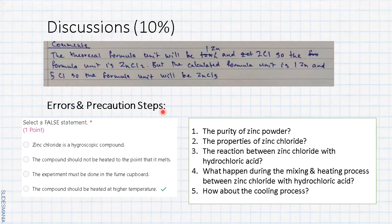Next is errors and precaution steps. You have to identify two things: for the whole process, why is there error? There's one question during pre-lab asking about select a false statement. The answer is D: the compound should be heated at higher temperature. No. While for the heating process we have to heat it slowly. Zinc chloride is a hygroscopic compound, yes. We cannot heat to the point that it melts, yes. The experiment must be done in the fume cupboard, yes.